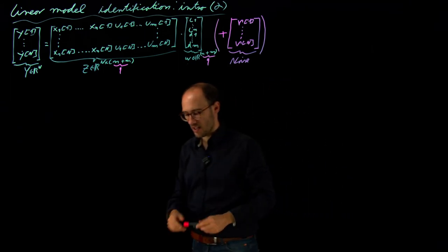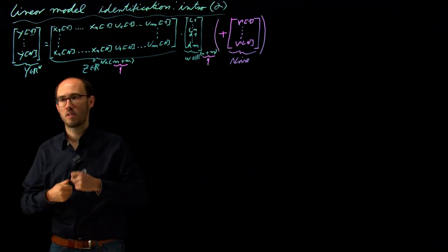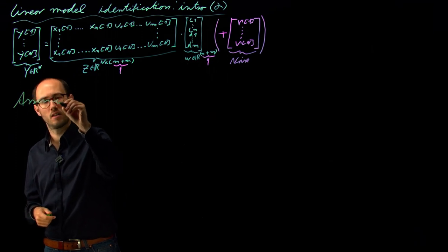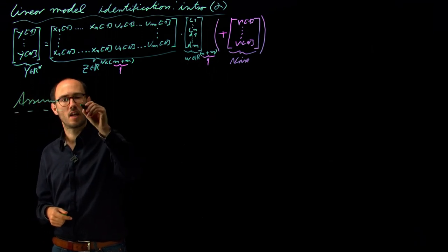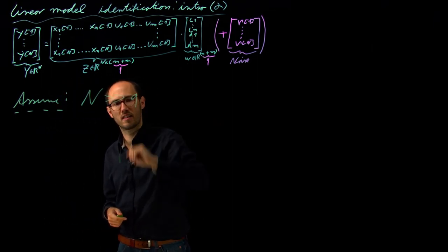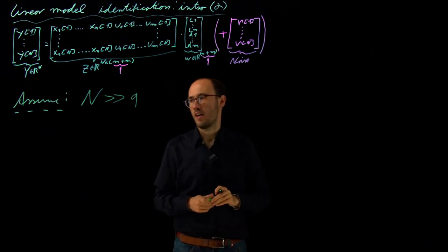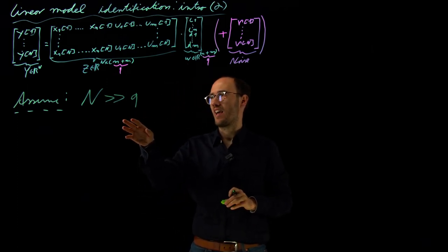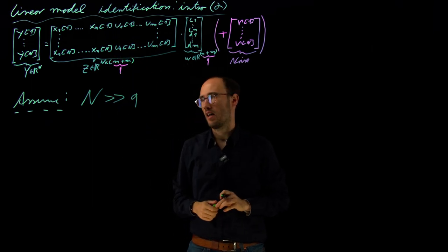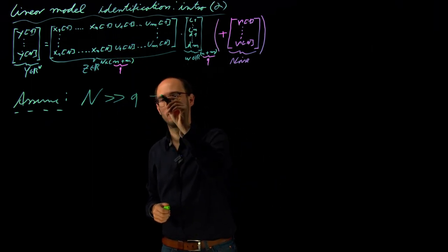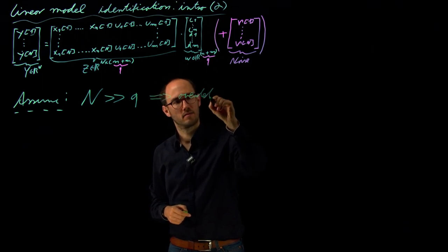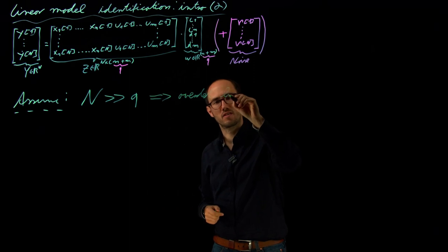For now, our motivation is to assume that the number of samples N is significantly larger than the number of parameters q. That's why this linear problem is equivalent to an overdetermined linear equation system.